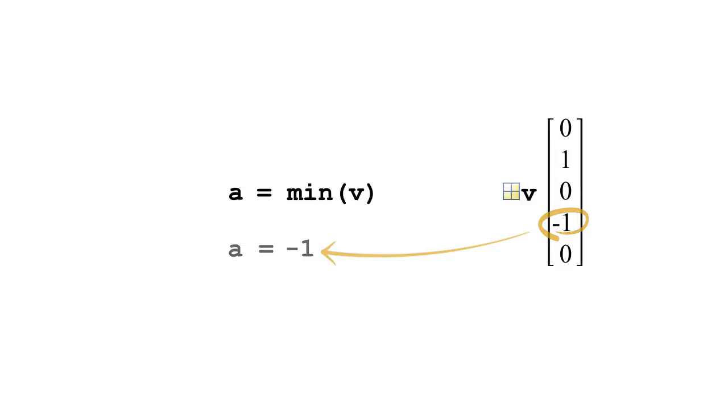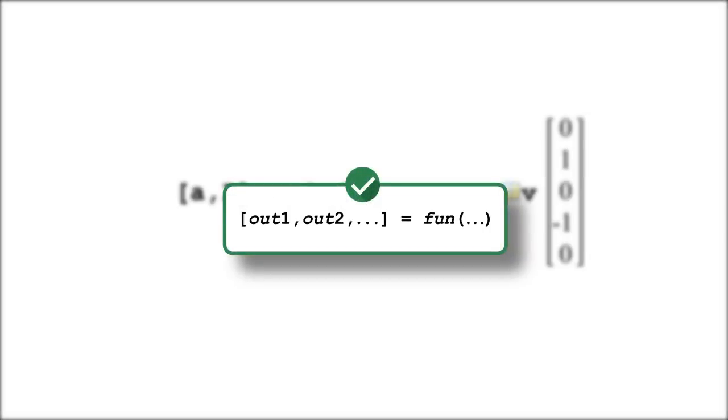What you may not have known is that the min function can also tell us the location of the smallest value. Here, it tells us the location is four, since the smallest value of the vector is negative one, which happens to be the fourth element of the vector. Many MATLAB functions can return multiple outputs by asking for them individually, inside a set of square brackets.